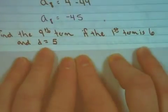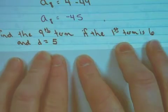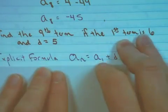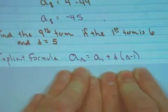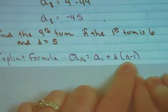Let's try it again. Let's find the 9th term if the first term is 6 and the common difference is 5. Here's my explicit formula again. a sub n is equal to a sub 1 plus d times n minus 1.